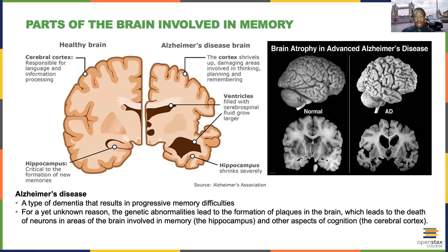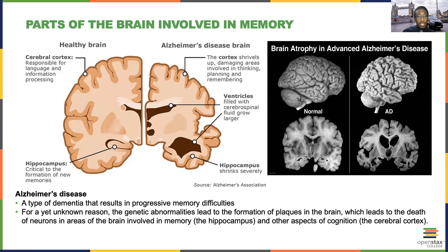Another interesting application of what we know about brain areas involved in memory is Alzheimer's disease. Alzheimer's disease is a type of dementia that results in progressive memory difficulties as well as a host of other cognitive problems. From a neuroanatomical perspective, we can see very clearly the differences between a healthy brain and someone who has advanced Alzheimer's disease.